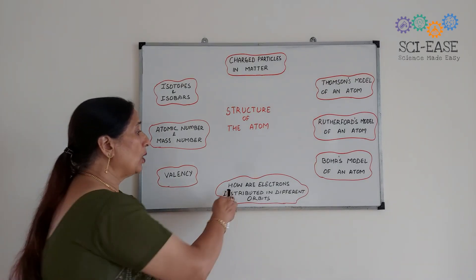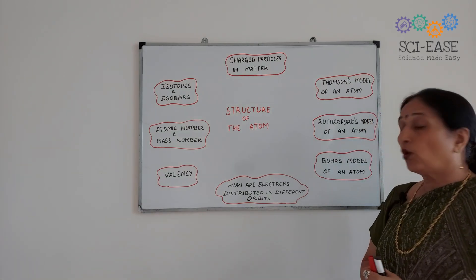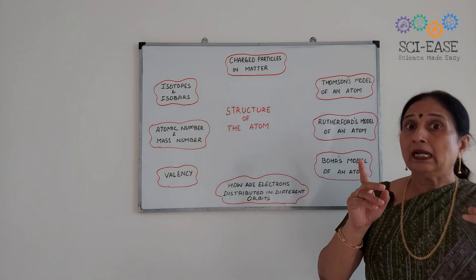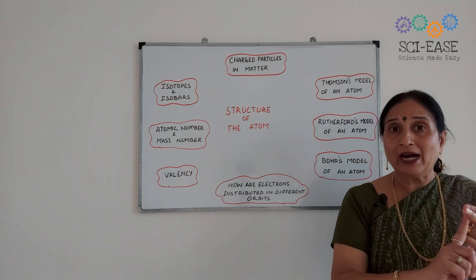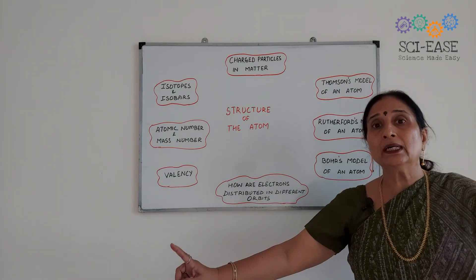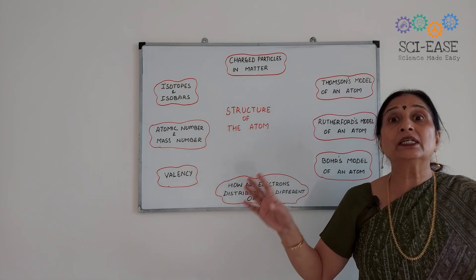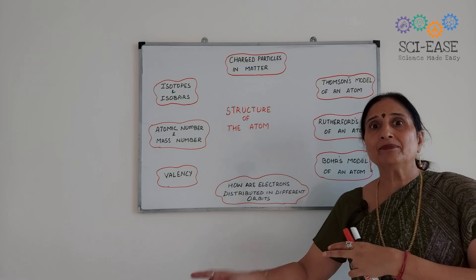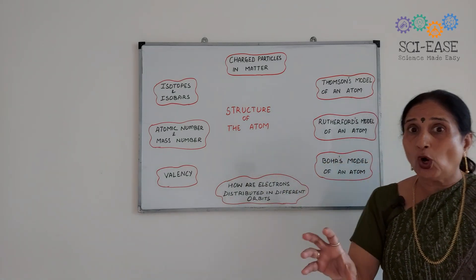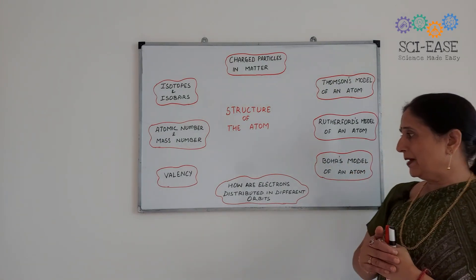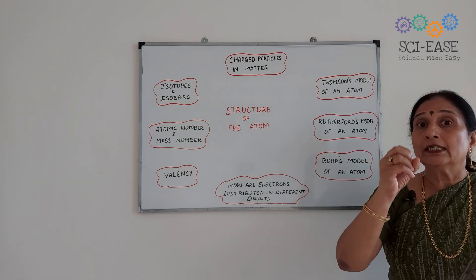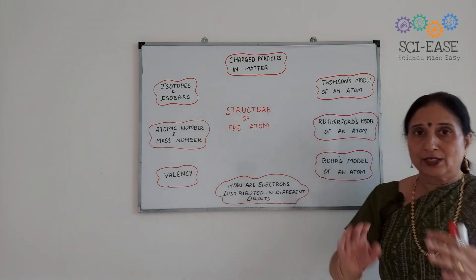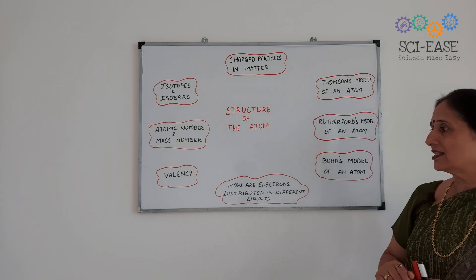Next is how electrons are distributed in different orbits — that's a very interesting and important part of the chapter. Here I will describe from hydrogen, atomic number 1, up to the element calcium with atomic number 20. You are to memorize the elements from hydrogen to calcium and we will draw the structure of these atoms, showing how the distribution of electrons takes place in the first shell, second, third, and so forth.